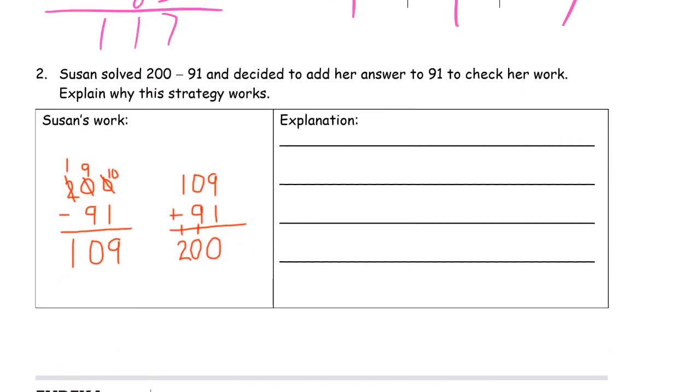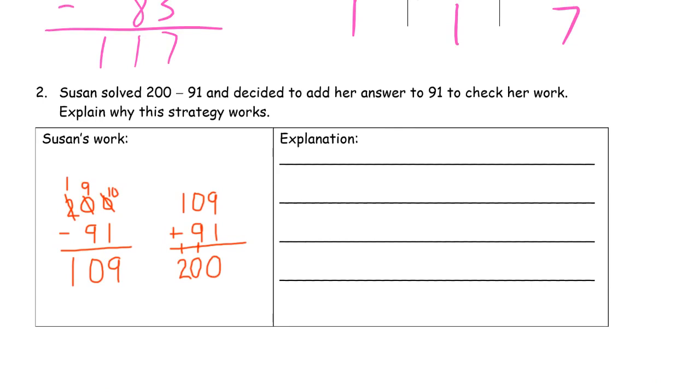And now we've come to some broken math. Susan solved 200 minus 91 and decided to add her answer to 91 to check her work. Explain why this strategy works. So let's see if she did everything right. 200 minus 91. Go on. She had to unbundle. Yep. She had to unbundle 100. Had 100 left. Good.